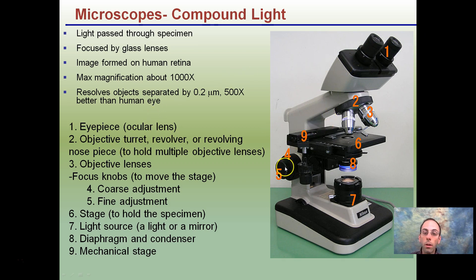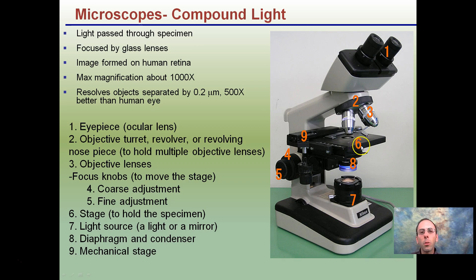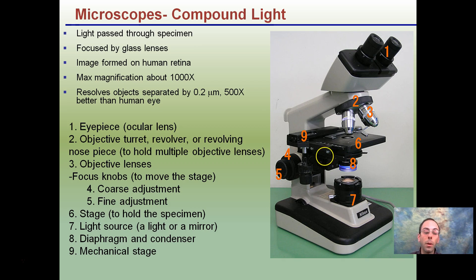In the objective lenses you have the fine focus, the coarse focus, the light source, and the diaphragm to allow more or less light through. If you're having trouble finding something on a slide that looks like it's on there, you always want to start at low power and adjust the light. If you put too much light, it may shine right through and make it impossible to see the specimen.